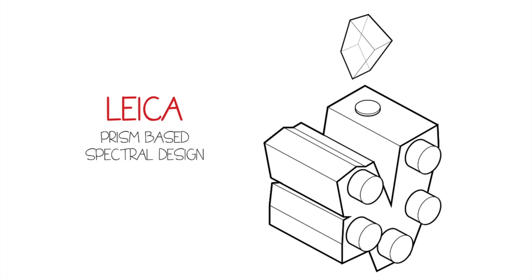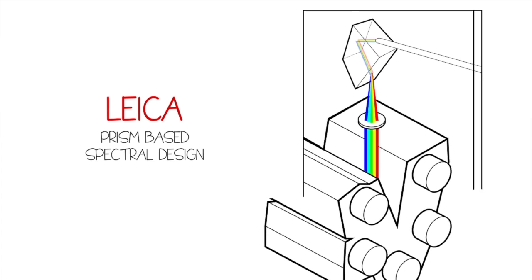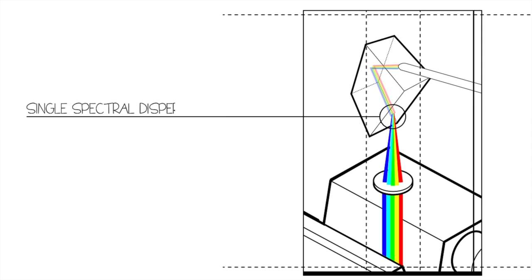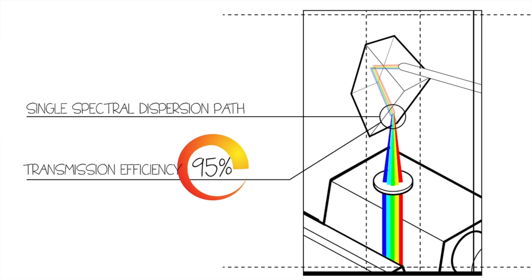Leica Microsystems has revolutionized spectral detection by using a prism-based design for optimized transmission of fluorescent signals. When a sample emits fluorescence, the emission passes through a prism that achieves a single spectral dispersion path with 95% transmission efficiency across the spectral range.